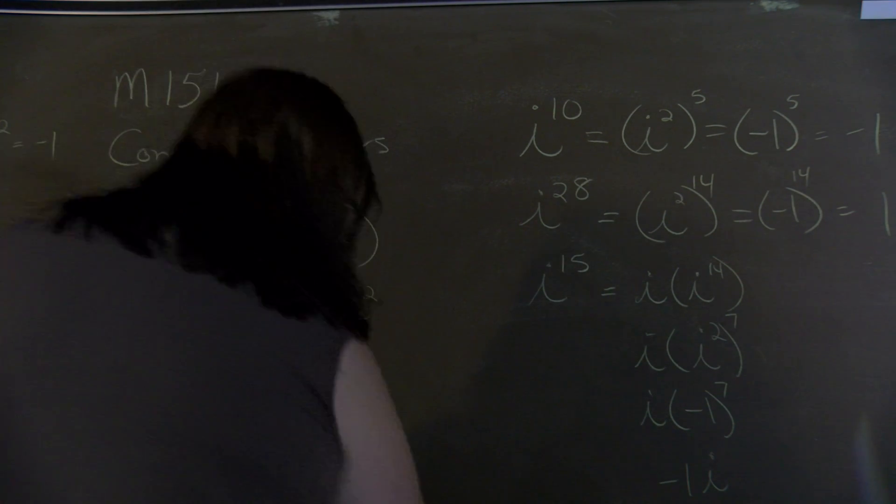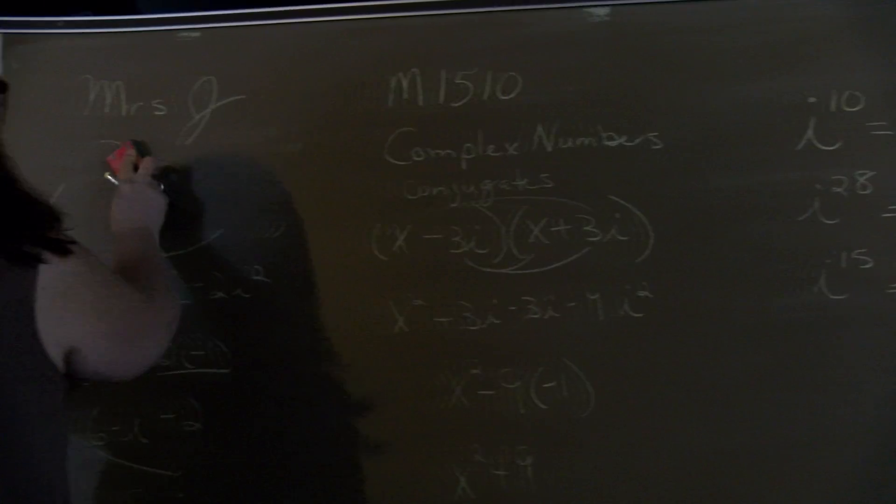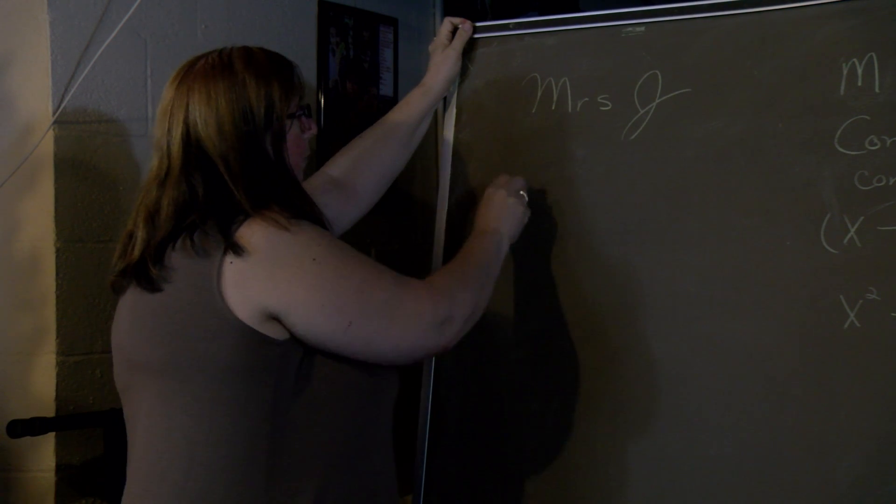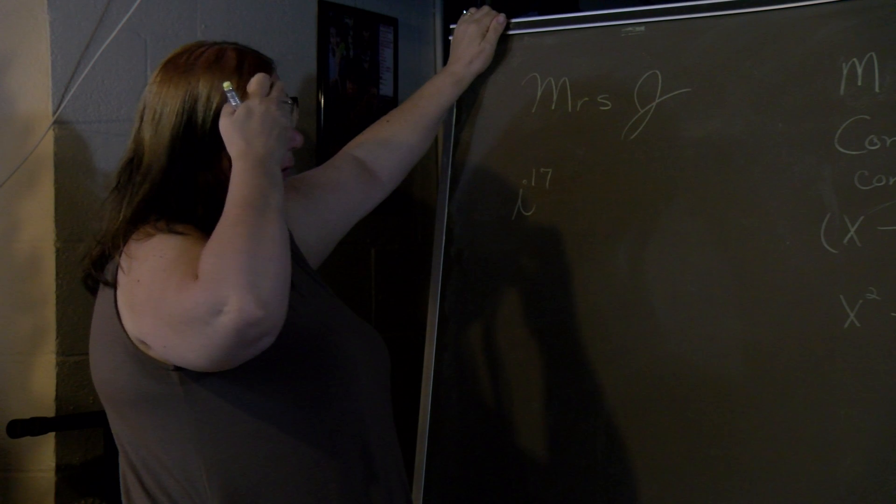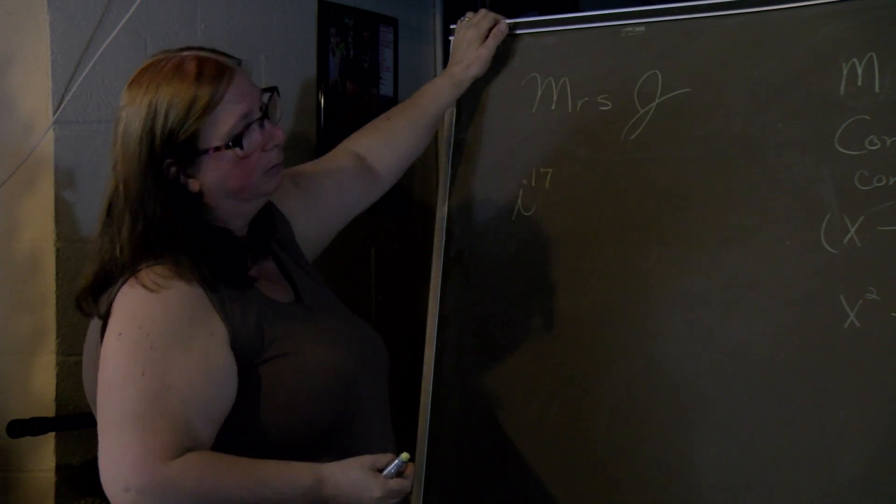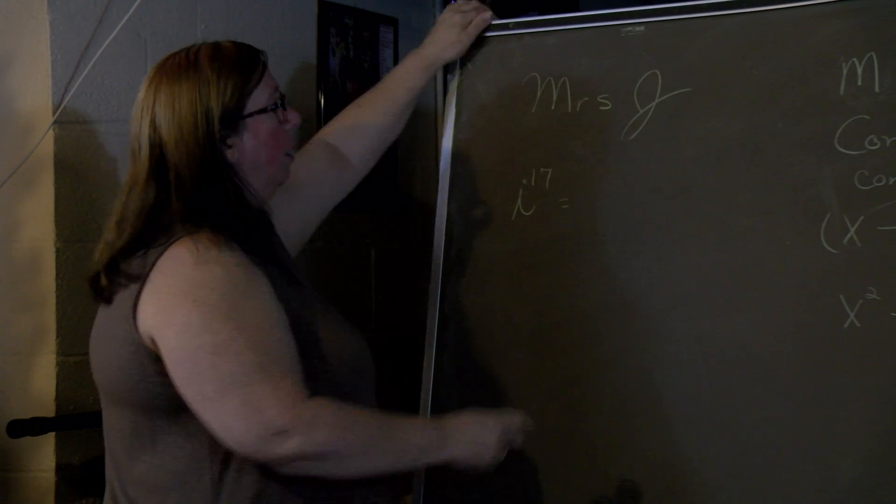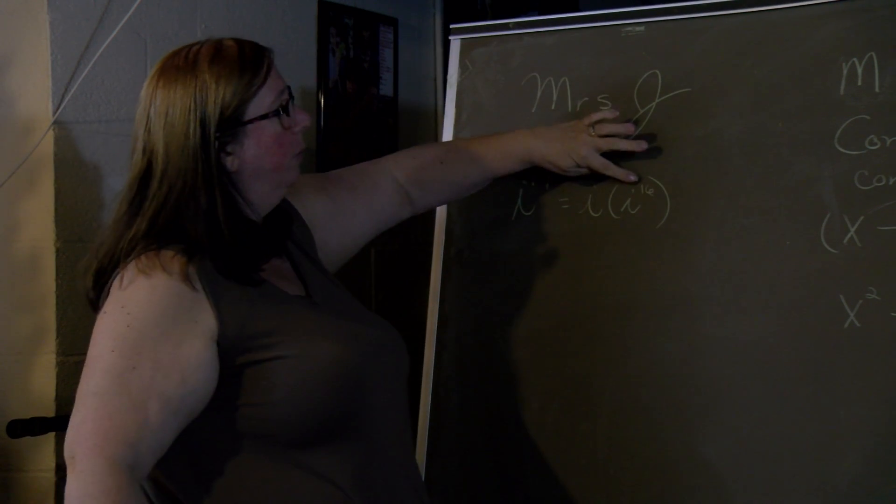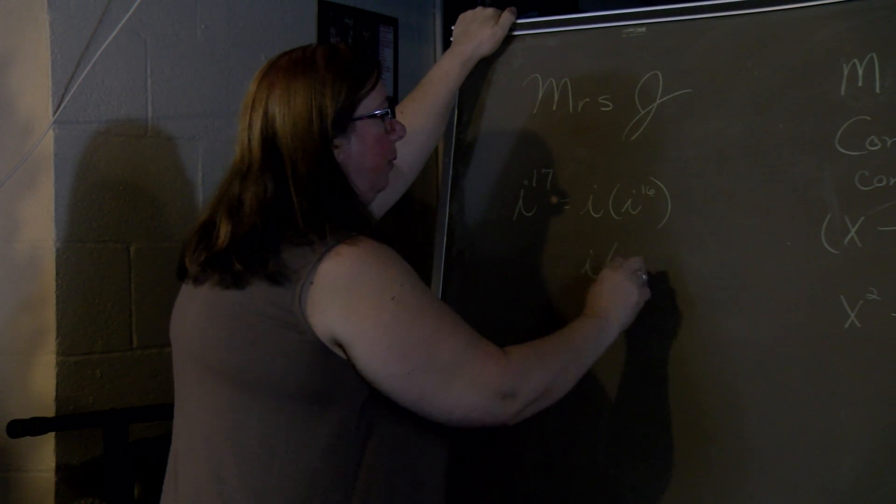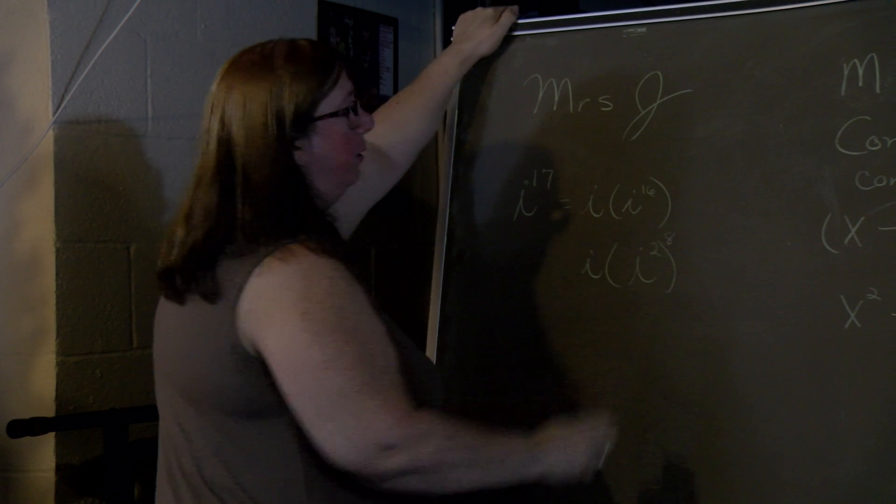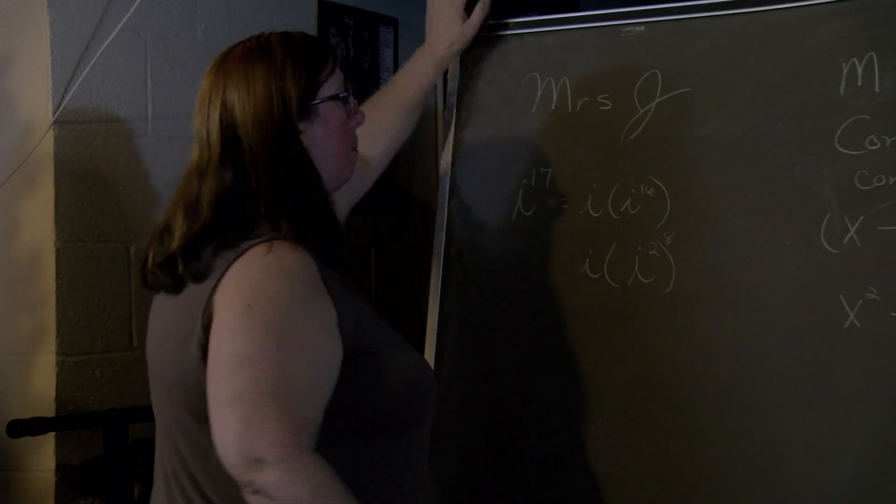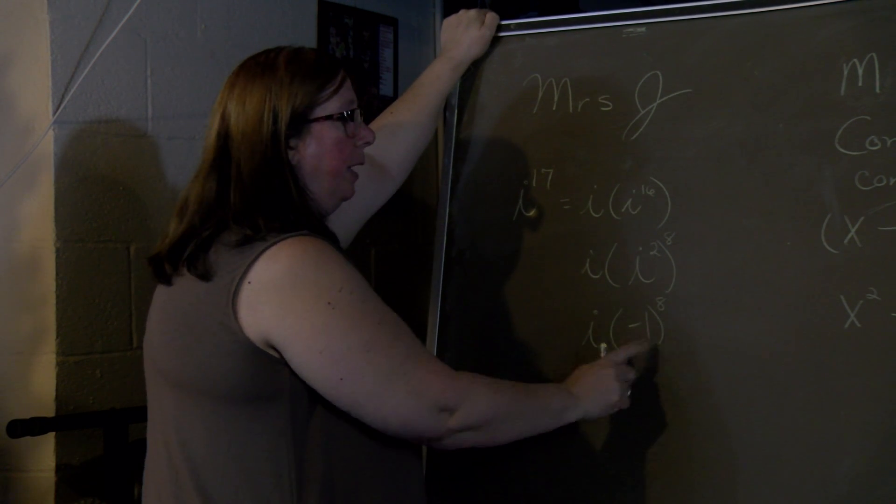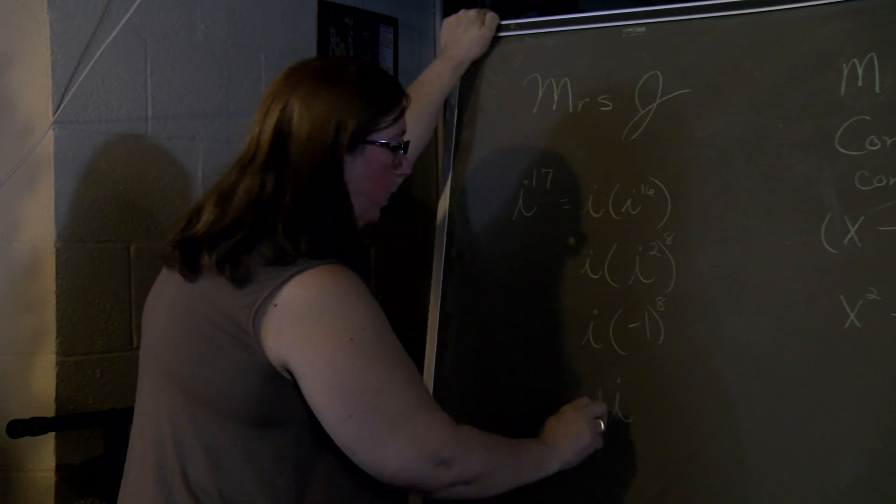I guess there's one more case we can do. i to the 17th. Because it's odd, we want to pull one out. That way then we can write this as 2 to a power. So we have our i and then we have i squared to the 8th, because 2 times 8 is 16. Keeping our i, i squared is a negative 1 to the 8th. Negative 1 to an even power is a positive 1. And so we just have one i or just i.